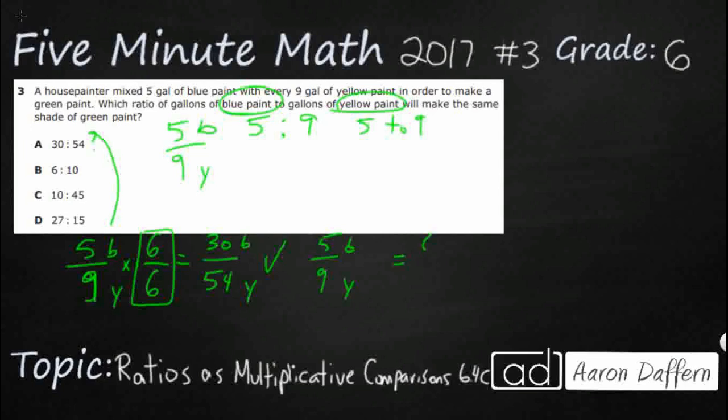nope, 6 to 10, that's not even going to be equivalent, I can tell you that right now. We're not multiplying 5 times anything to get to 6 or 9 times anything. You know what they did? They just did plus 1. That's not how equivalent fractions work, so that's no good.